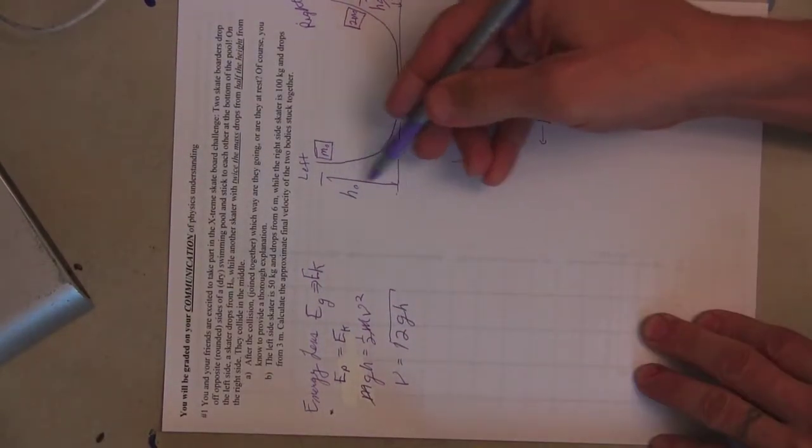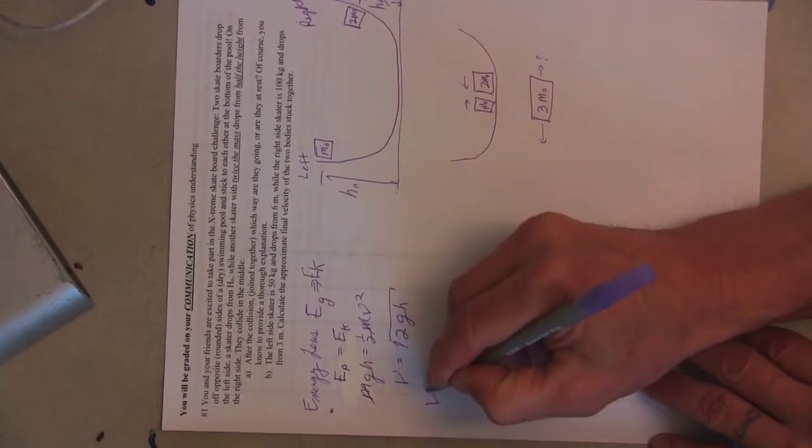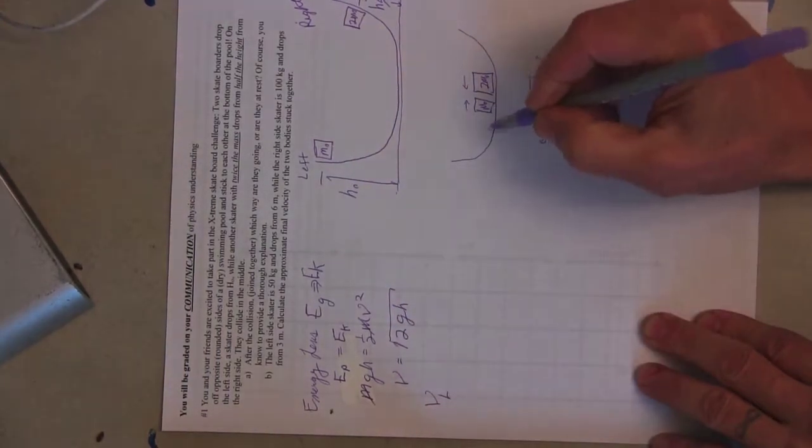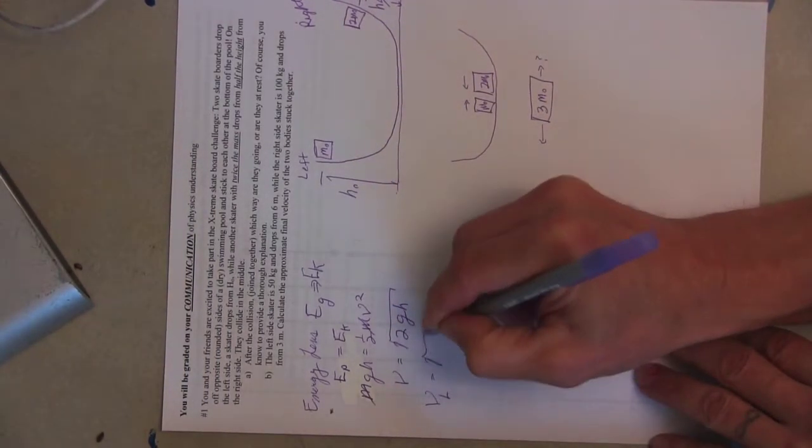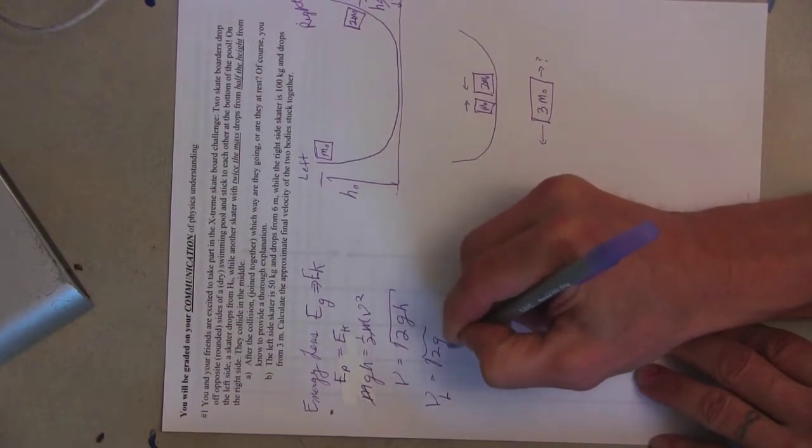So on the left, where we fall from h naught, we could say v on the left at the bottom is equal to the square root 2gh naught.